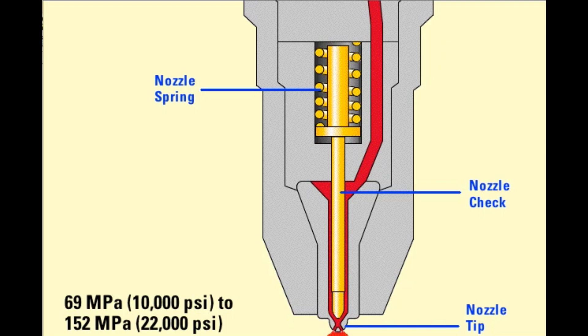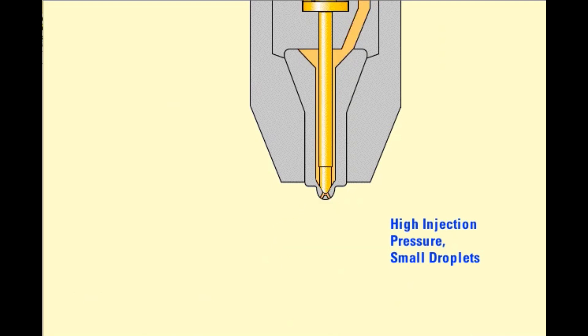Depending on engine speed and fuel delivery, this pressure ranges from about 69 megapascals or 10,000 psi to 152 megapascals or 22,000 psi. High injection pressures promote complete combustion and lower exhaust emissions, pushing the fuel through the orifice holes in the nozzle tip.